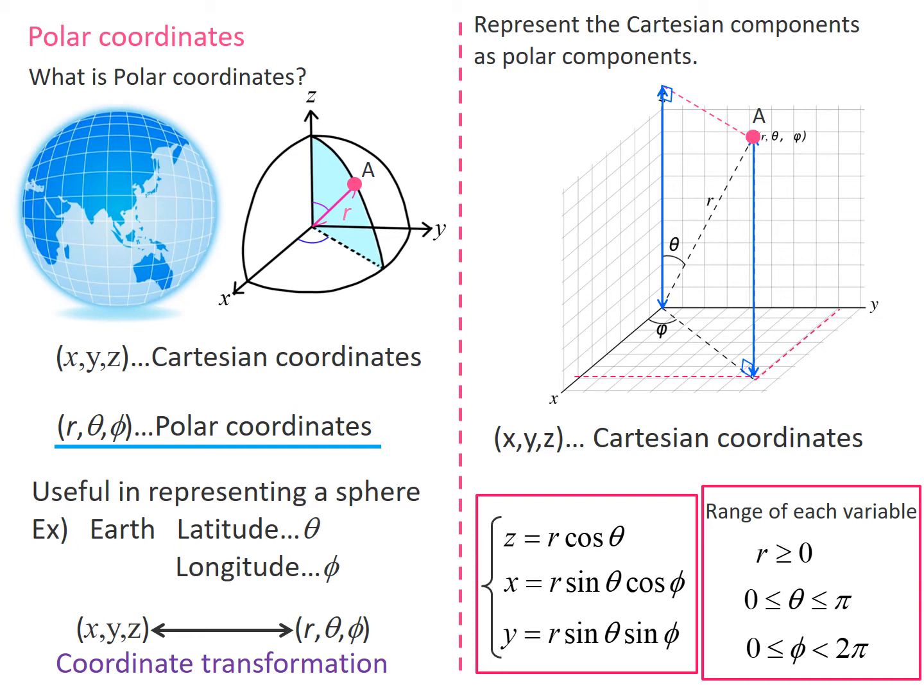r is the linear distance between point A and the origin. Theta is the angle between the A vector and the z-axis, which corresponds to latitude on Earth. Phi represents the angle between this section and the x-z plane, which corresponds to longitude on Earth.